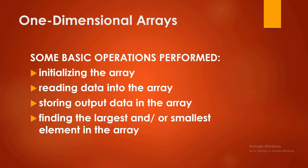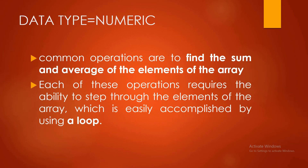So these basic operations are: initializing the array or array initialization, reading data into the array, storing output data into the array, and finding the largest or smallest element in the array. There are still more operations we can perform, but I included four because these are the most commonly used. Later on, I will also show you different types of one-dimensional array programs and explain the lines of code. When using numeric data types, common operations include finding the sum and average of array elements. Each of these operations requires the ability to step through elements of the array, which is easily accomplished using a loop.